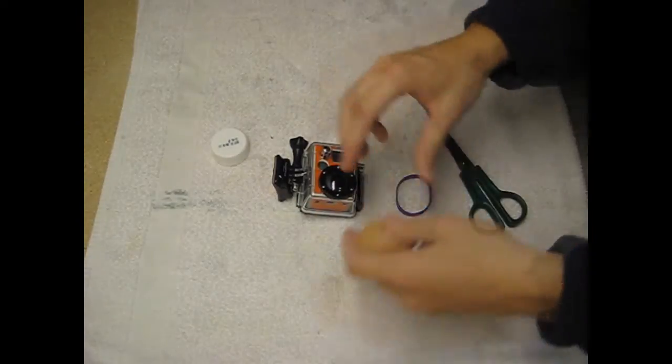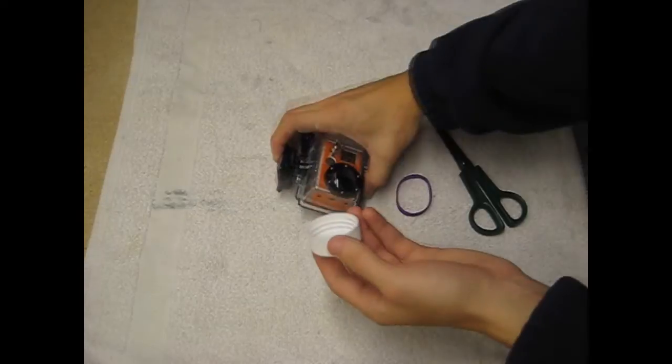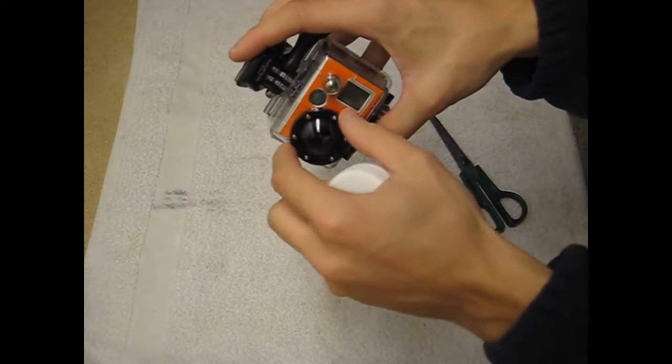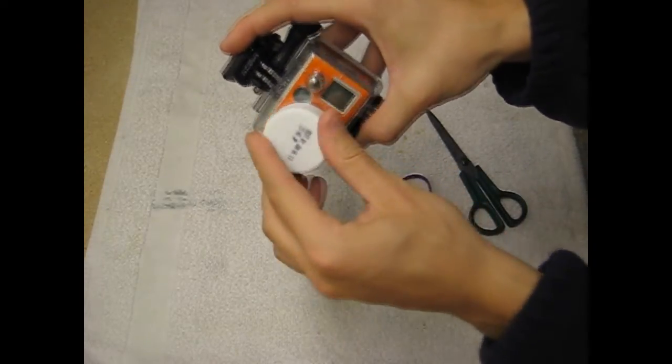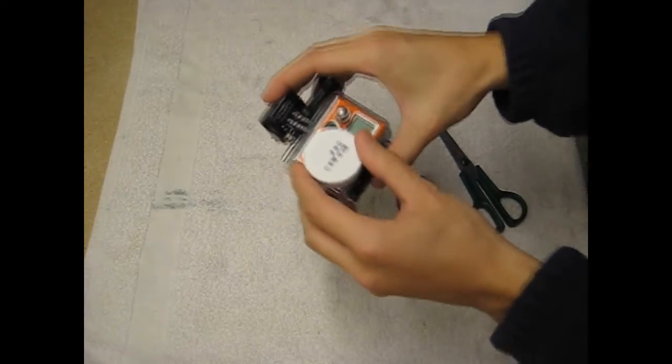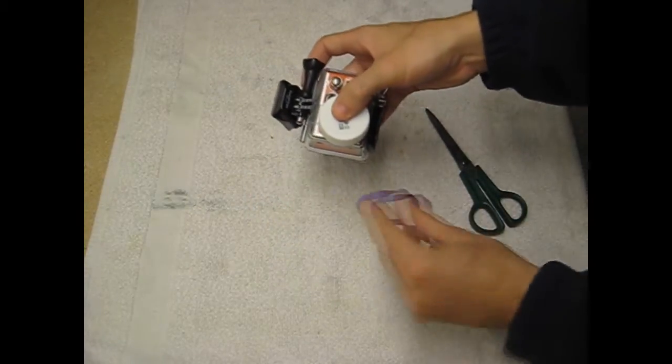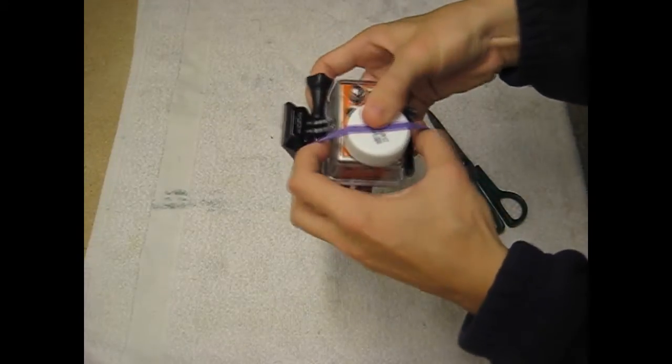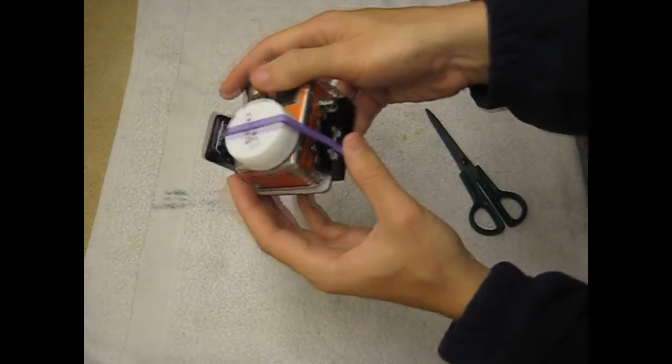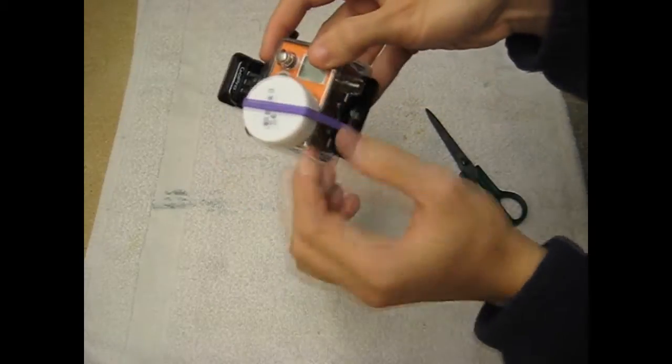To start off, you just make sure that the cap that you choose can go over this black ring right here. This one does, so it locks in place good. Then wrap your rubber band around and make sure it's flat and not all twisted up.